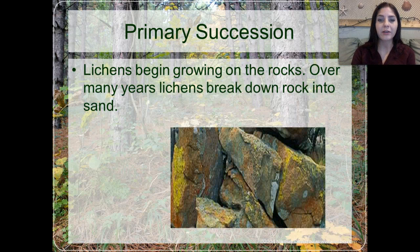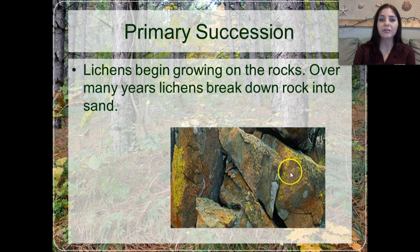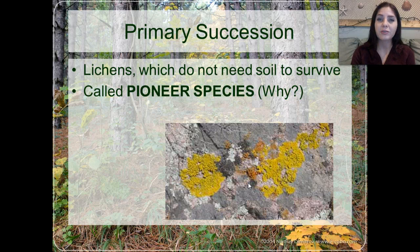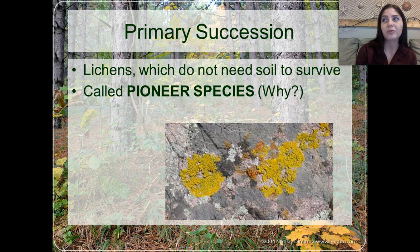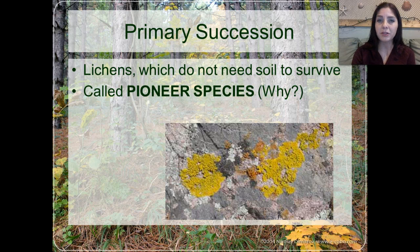Starting from the beginning, we have lichens growing on rocks. Over many years, those lichens break the rock down into sand. Lichens, which do not need soil to survive, are called a pioneer species. Just like we call the people who first colonized America pioneers, we call the first species to colonize an area a pioneer species.